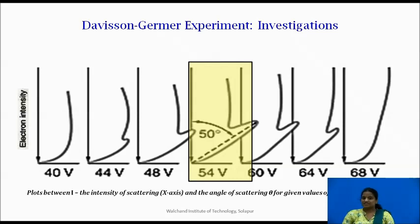The maximum is the indication that the electrons are being diffracted. This peak indicated the wave behavior of the electrons.